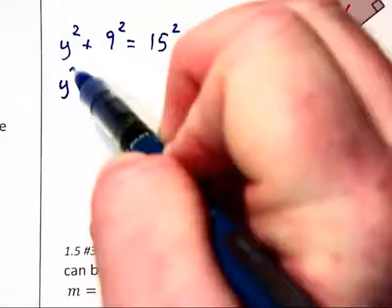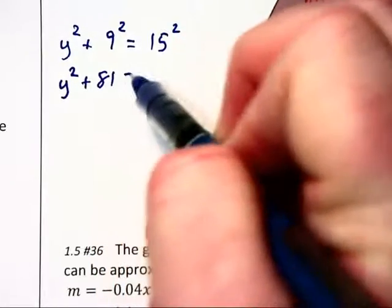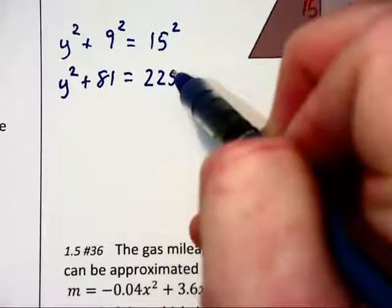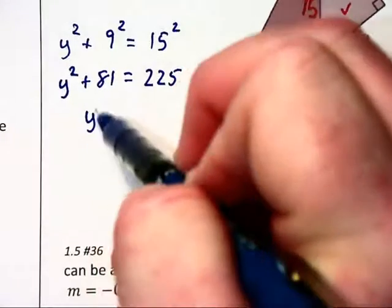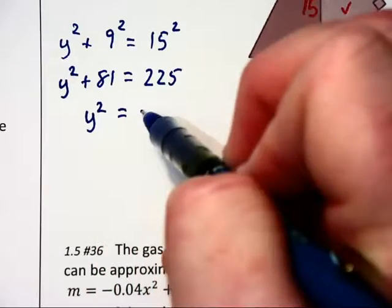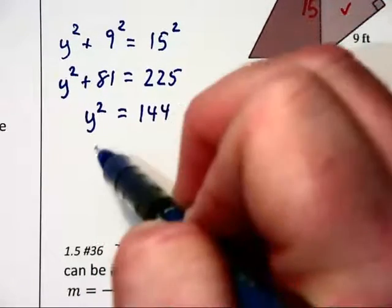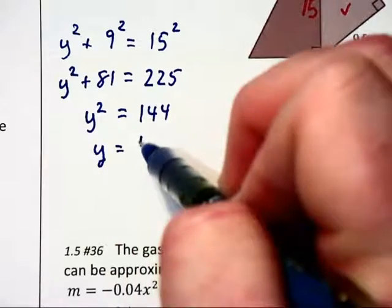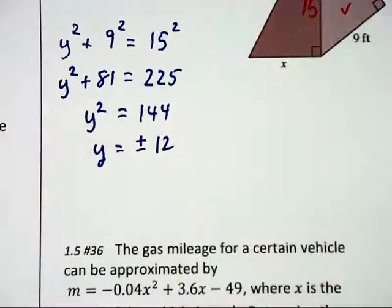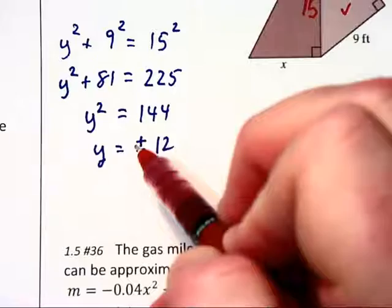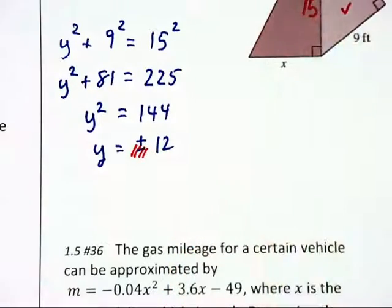Now, this should be a whole lot easier than the last problem. We're going to have y squared plus 81 equals 225. Subtracting 81 from each side, we get y squared equals 144.